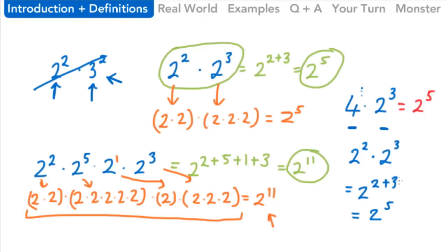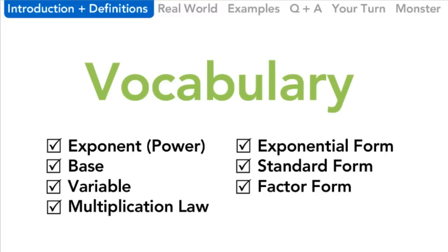Some vocabulary that we learned last time and need to remember: Exponent is the number floating above the base — it can also be called a power. A variable is sometimes used as a base or exponent, so that's the mystery number. The multiplication law is what we're learning today. And exponential form, standard form, and factor form are the three ways to write our answers.